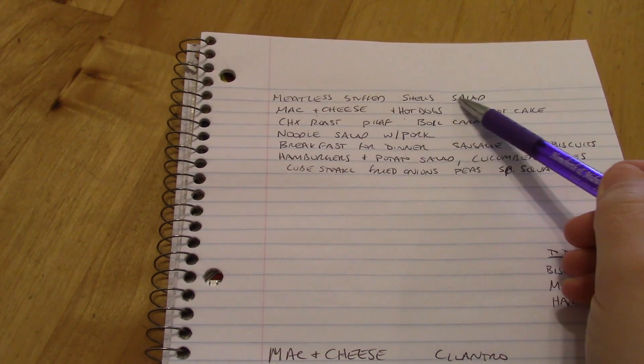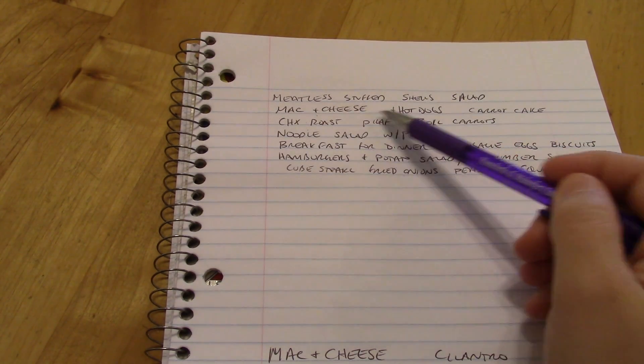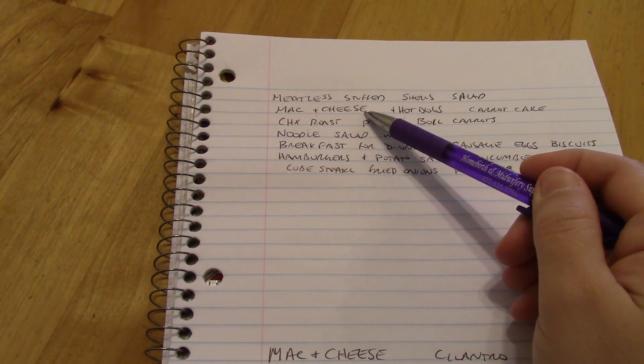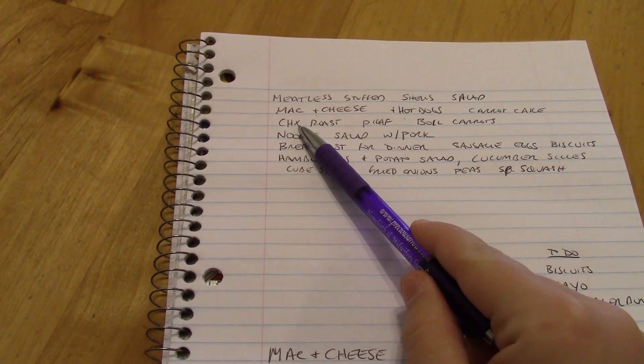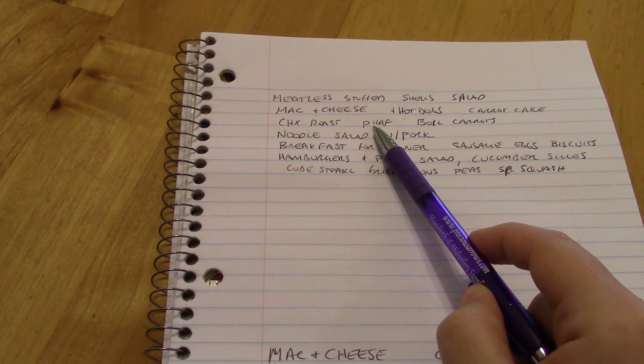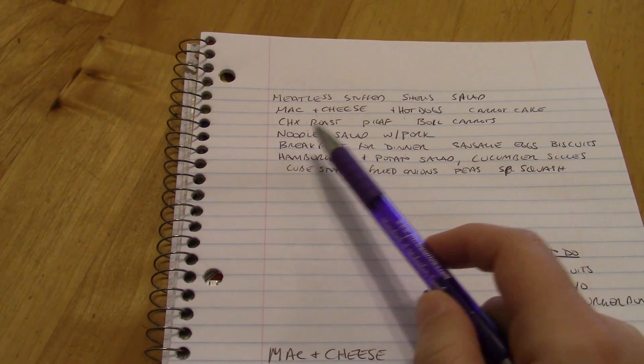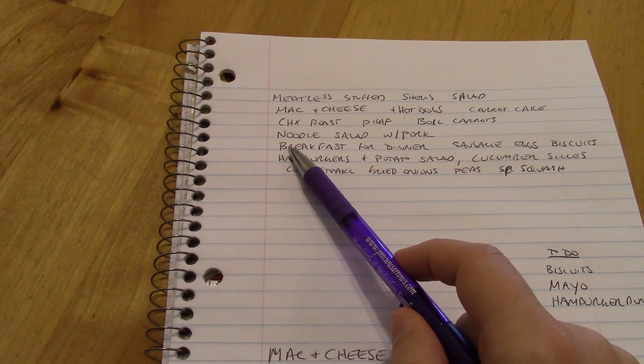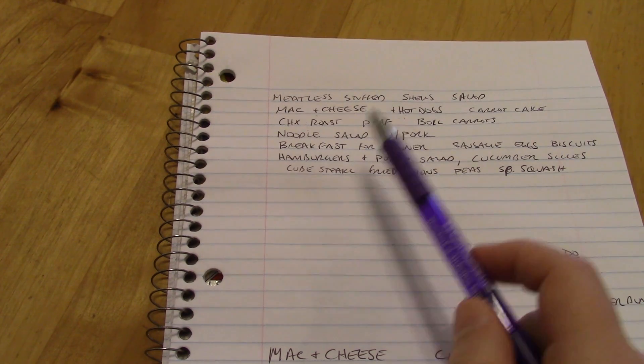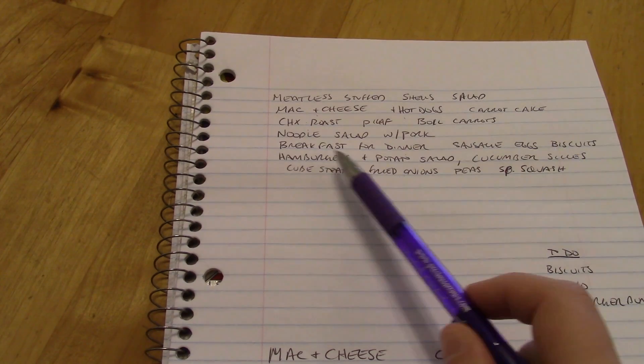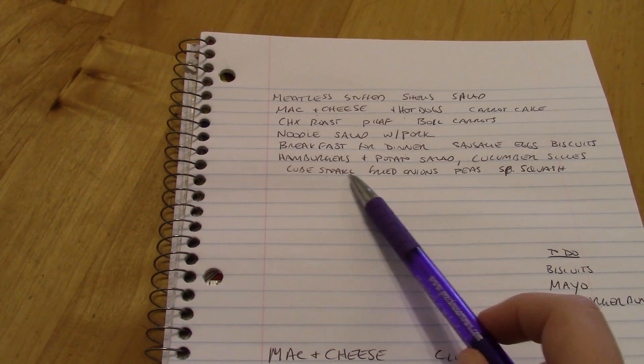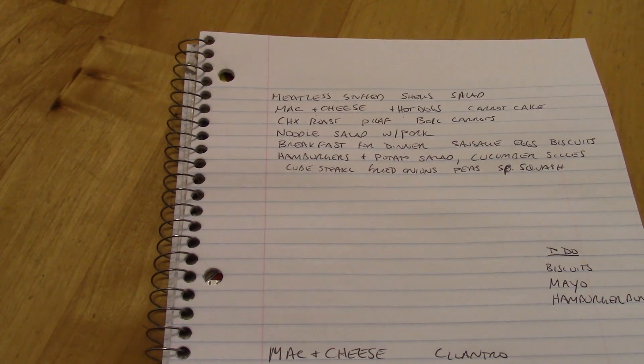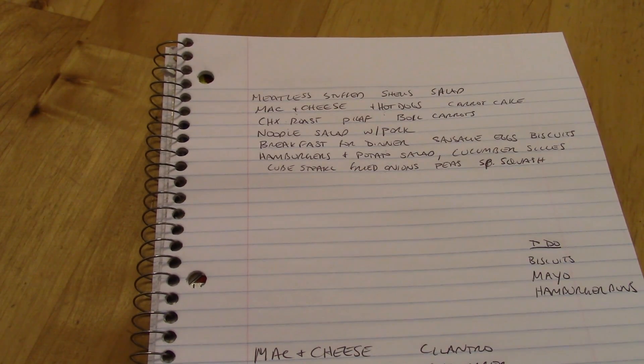We're going to have dairy-free stuffed shells and salad, macaroni and cheese or macaroni salad with hot dogs and carrot cake for the birthday boy. A roast chicken, a pilaf, and some boiled carrots. A Vietnamese noodle salad with pork. Breakfast for dinner, which would be sausage, eggs, and biscuits. It's hamburgers and potato salad with cucumber slices, cube steak, fried onions, peas, and spaghetti squash. All right, that's everything for this week.